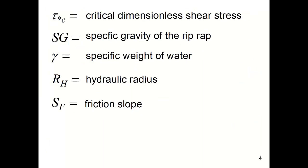τ*c is called the critical dimensionless shear stress. Sg will be the specific gravity of the riprap. γ is the specific weight of the water.